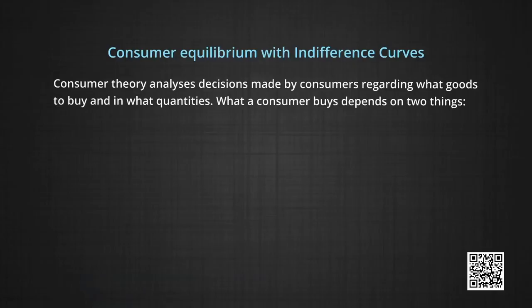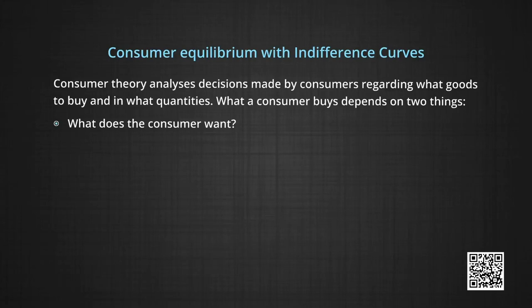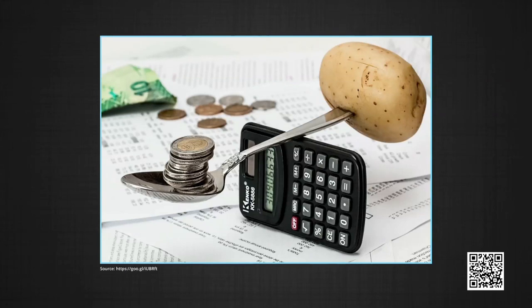Consumer theory analyzes decisions made by consumers regarding what goods to buy and in what quantities. What a consumer buys depends on two things: what does the consumer want, and what can the consumer afford to buy? Let us examine the second question first — what are the combinations of goods that the consumer can afford to buy?